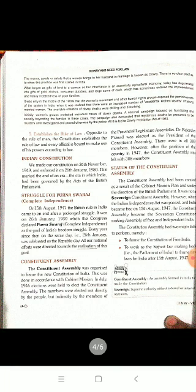There were in all 389 members. However, after the partition of the country in 1947, the Constituent Assembly was left with 308 members. The Constituent Assembly had been created as a result of the Cabinet Mission plan and under the direction of the British Parliament.